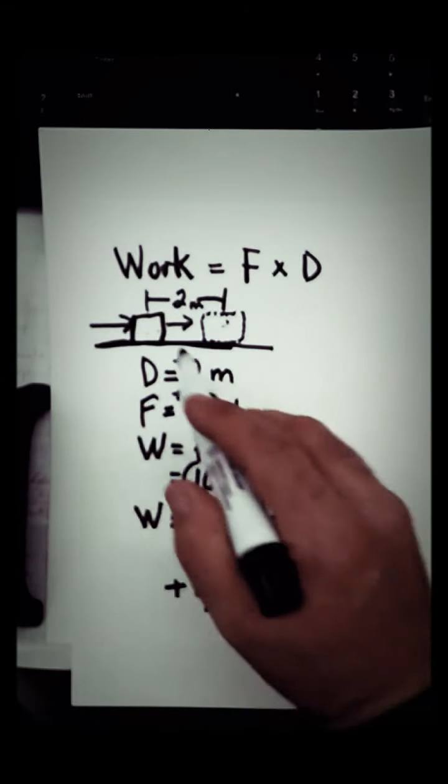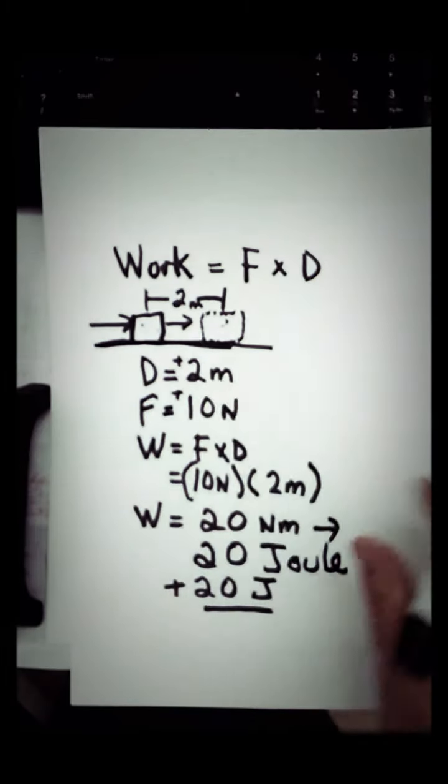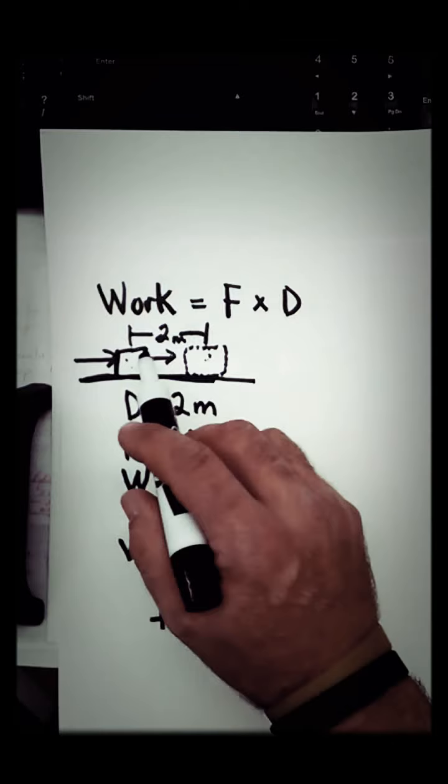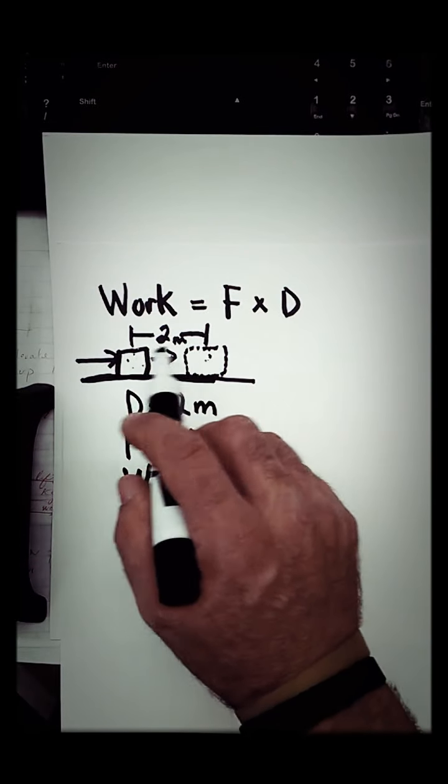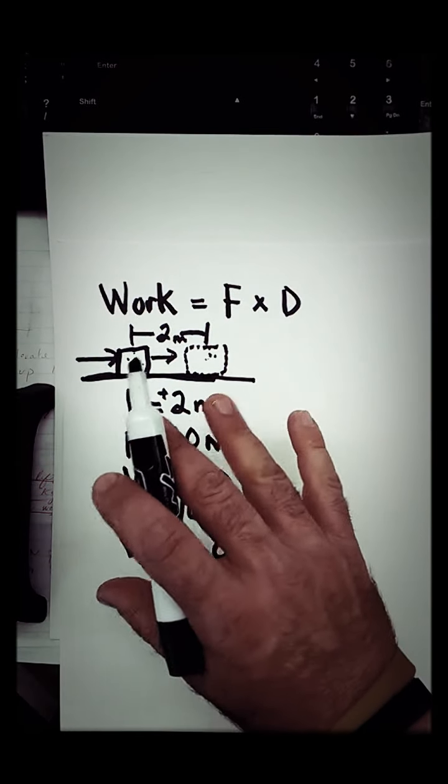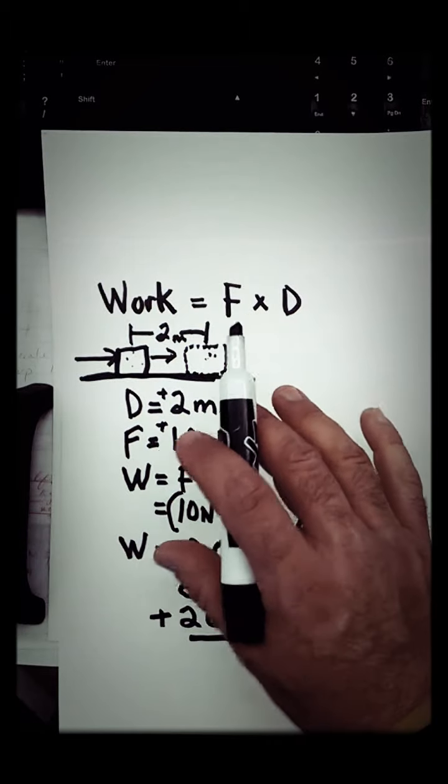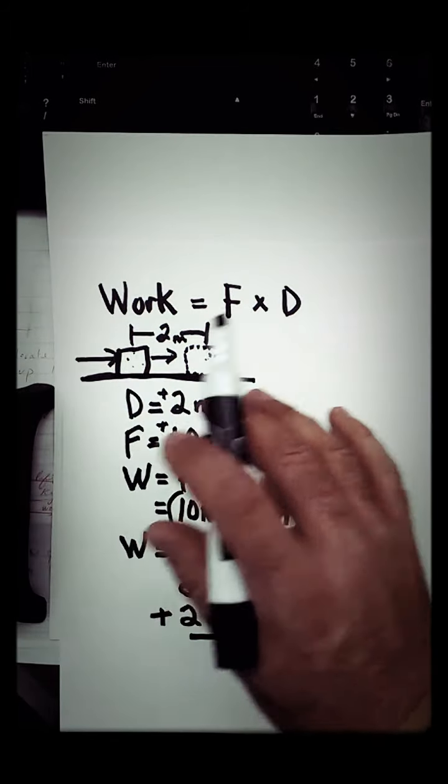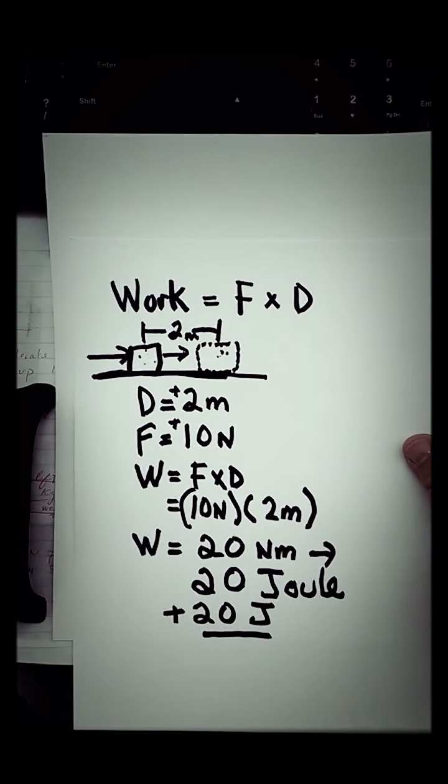So I mentioned that the work here ended up being 20 joules, but we mentioned no time here. So this could have taken 10 years to do, and it would still be considered the same amount of work. It could have taken 10 seconds to do. It's the same amount of work. So in real life, we've got times applied to these things.